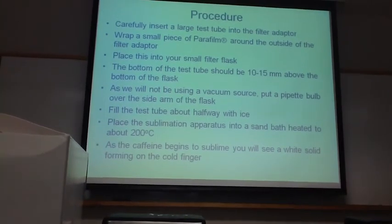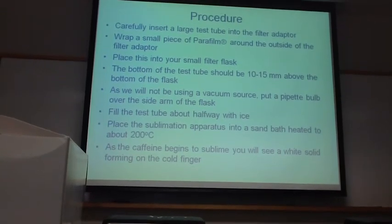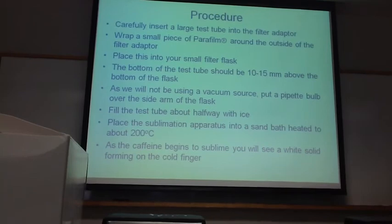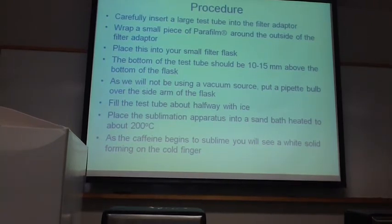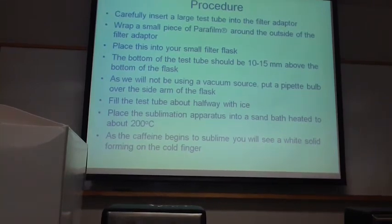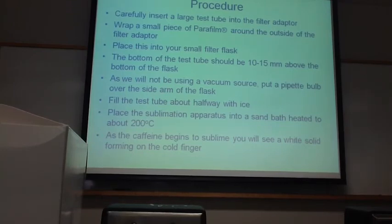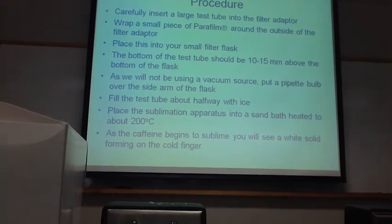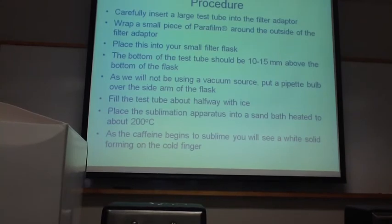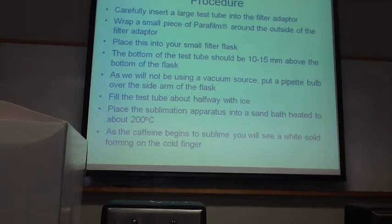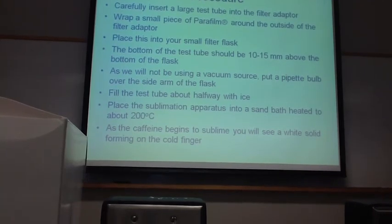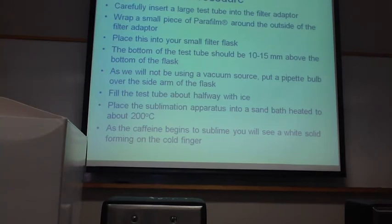This is basically just a summary of the procedure on your handout. First, to make the apparatus — everything should be in your kit, either in your drawer or your red kit. You're going to fit the test tube in, parafilm around the adapter to get a good tight seal, put a rubber bulb on, and you've got your apparatus. Make sure the test tube is number 9800 — that's the one you want to use. Wrap the parafilm around the outside of the filter adapter, not on the side arm. Put it in your filter flask about 10 to 15 millimeters. We're not using a vacuum source; we're using the pipette bulb to hold pressure constant so sublimation can occur.